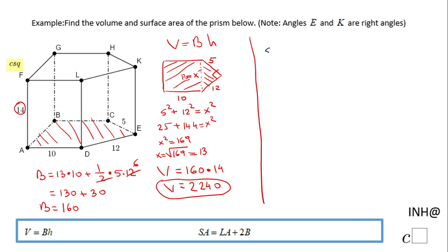For the surface area, we have a formula: the surface area equals the sum of the lateral area and the two bases. The base is 160 — we know that — so we have to find the lateral area of this pentagonal prism.